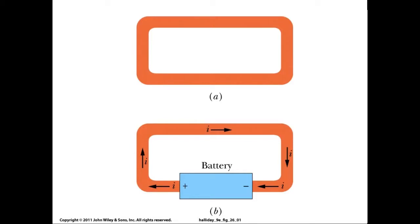Current is Coulombs per second — nothing magic about it. That gets its own unit: when you do a lot of important work in a field, you can get a unit named after you. That's the Ampere — named after somebody we'll meet later in the course — or just the amp. One ampere is one Coulomb per second.